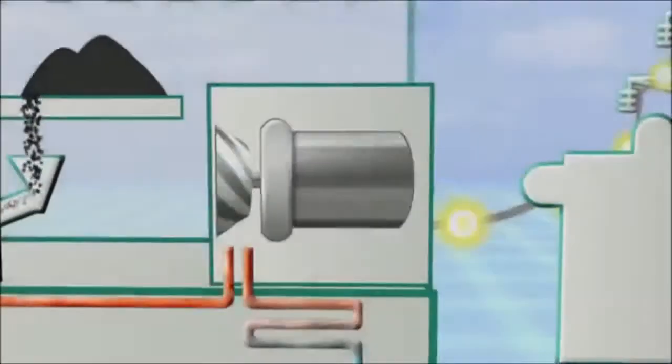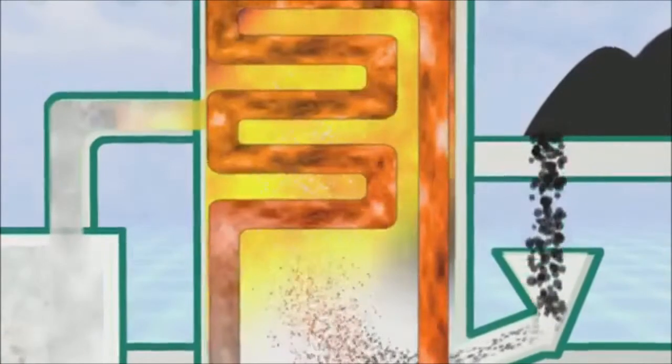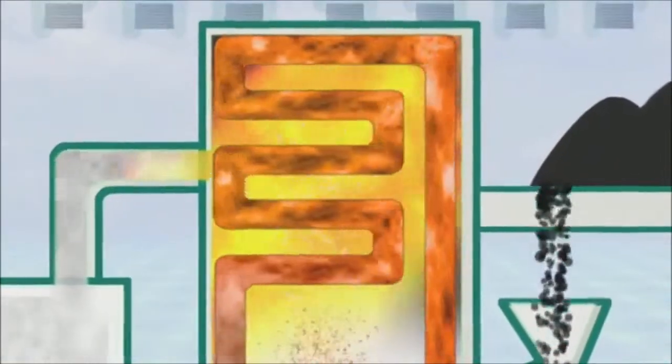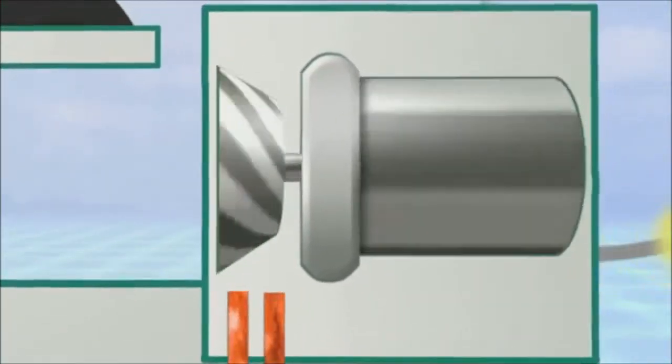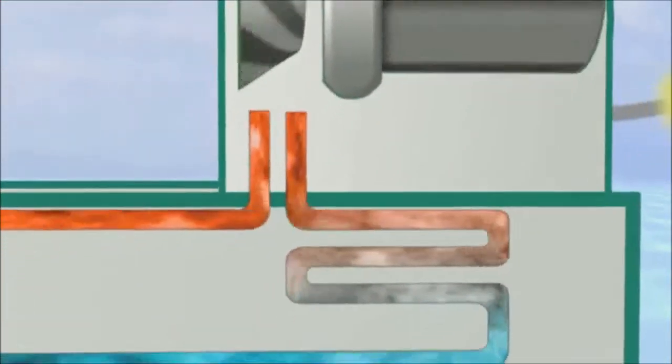The second part of the system is a steam turbine generator, which converts the heat energy captured by the steam into electrical energy. First, the intense boiler heat turns water running through pipes around the boiler into steam. The steam travels through more pipes to the turbine, causing it to spin and turn the shaft of the generator, which creates electricity. Another series of pipes allows the steam to cool, condensing back into water and heading back to the boiler where the process begins again.